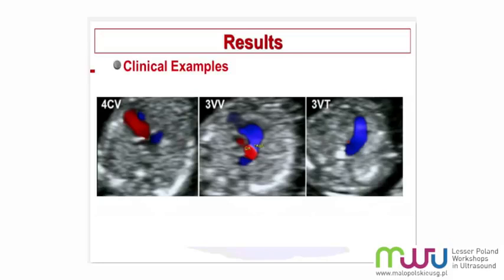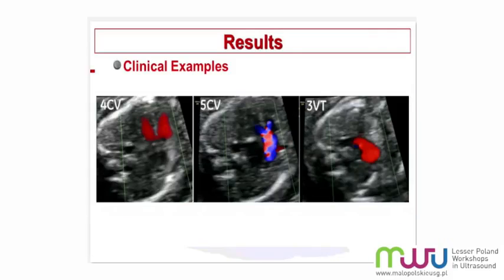The last case presented here had two inflows. You can see the deviation of the cardiac axis, turbulence at the level of the outflow rising above the ventricular septum, and an almost horizontal position of one singular arm of the V-sign. That case was common arterial trunk.